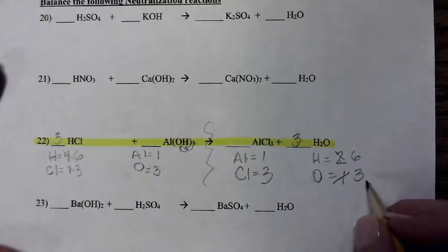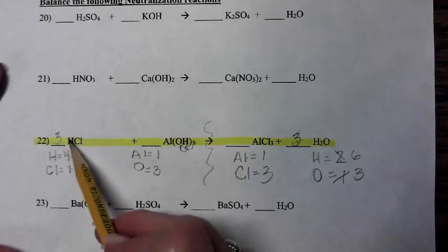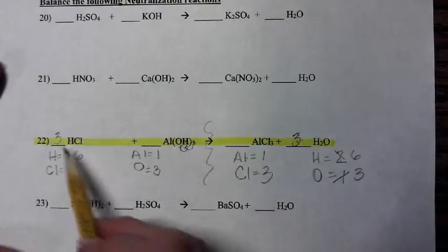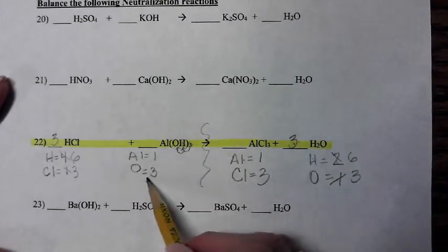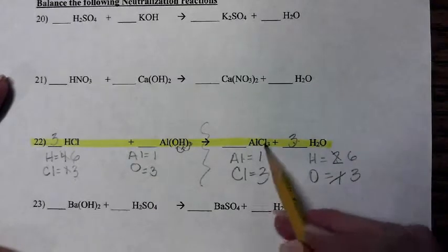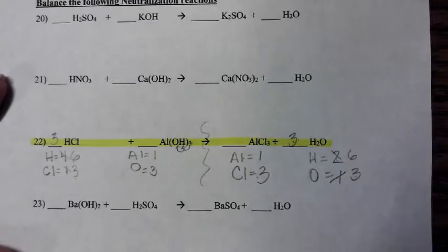Let's go and look. Looks like that balanced everything out. See, three, six hydrogens, three chlorines, one aluminum, three oxygens, one aluminum, three chlorines, six hydrogens, three oxygens. It's balanced.